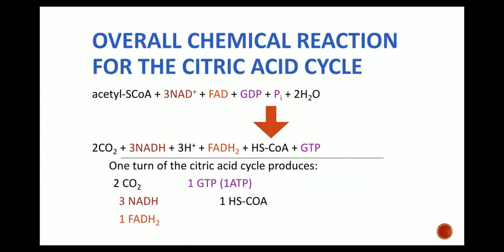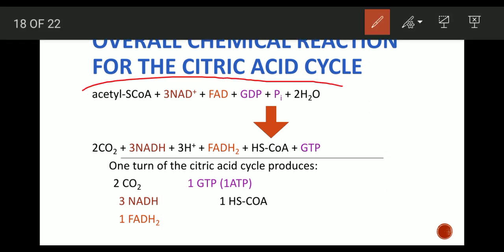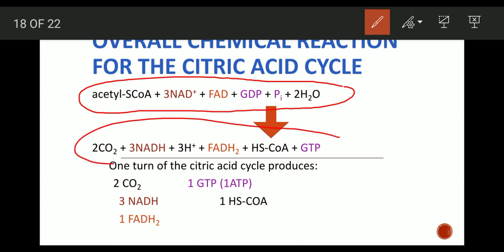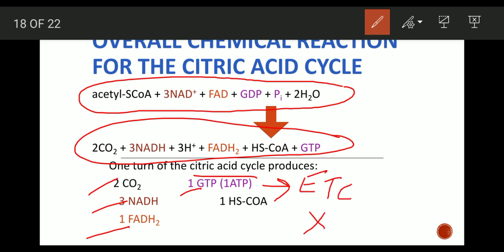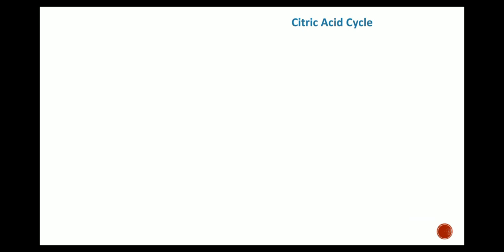The overall chemical reaction for the citric acid cycle: in one turn of the cycle, it produces two CO2 molecules, three NADH, one FADH2, one GTP (which later produces ATP without going through the ETC), and one HS-CoA. For one molecule of glucose, the Krebs cycle occurs twice — so multiply all products by two.